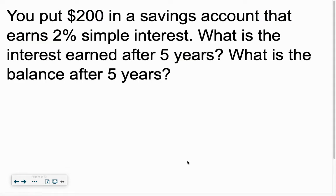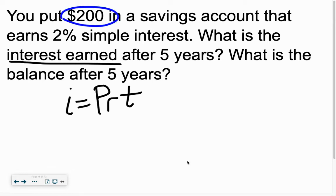Looking again here, you put $200 into a savings account that earns 2% simple interest. What's the interest earned after five years, and what's the balance after five? One question at a time. What's the interest? Sounds like we need to bring our friend along, IPERT. IPERT, the P stands for principal, the amount of money we start with. $200.